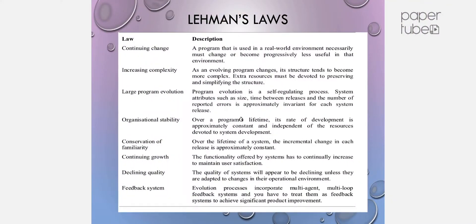Lehman's Laws: First, continuing change — the real-world environment is changing, so software must continually adapt. Second, increasing complexity — as changes happen, the system becomes more and more complex. Third, large program evolution is a self-regulating process — system attributes such as size, time between releases, and number of reported errors are approximately invariant for each system release.